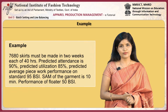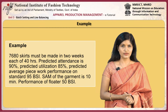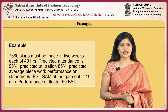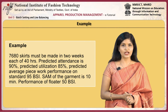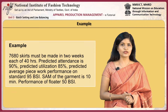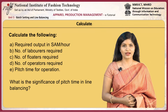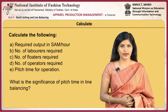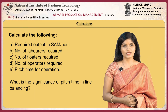Now we will take an example of batch setting. 7,680 skirts must be made in 2 weeks, each of 40 hours. Predicted attendance is 90%, predicted utilization is 85%, predicted average piecework performance is 95 BSI, SAM of the garment is 10 minutes, and the performance of the floater is 50 BSI. Calculate: required output in standard minutes per hour, number of floaters required, number of operators required, pitch time, and the significance of pitch time in line balancing.